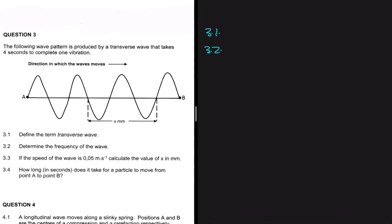Question 3.2 asks us to determine the frequency of the wave. We have already deduced that the period equals four seconds, because the wave takes four seconds to complete one vibration. So the frequency equals one divided by the period, which is one divided by four, giving us 0.25 hertz.